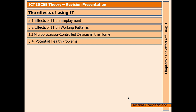If you have the latest ICT book, it doesn't have sections 5.1 or 5.2 — it directly starts from microprocessor control devices and then health problems. However, this content has been intentionally added to give extra information in case any question comes up based on that.